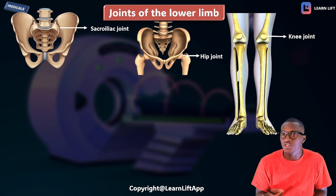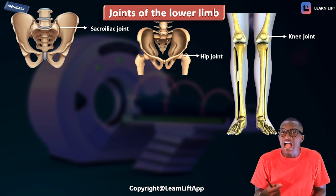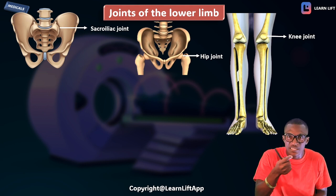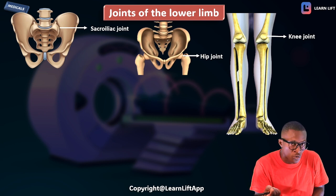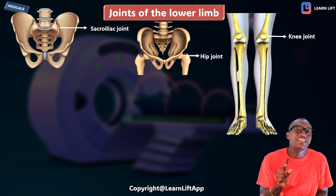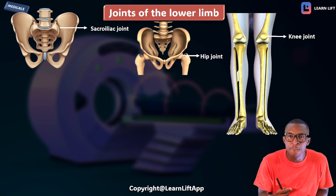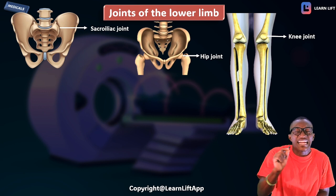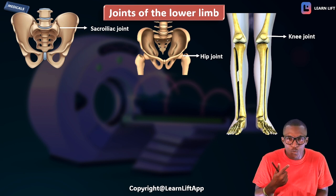The next joint is the knee joint. The knee joint is formed by the distal part of the femur and the proximal part of the tibia, as well as the patella — which is the largest sesamoid bone. The knee joint has a large cavity, which is why dislocation can occur in that region.